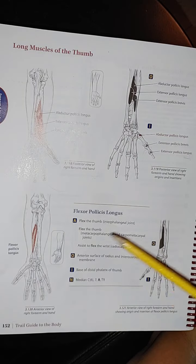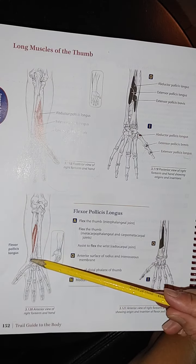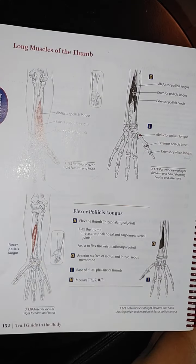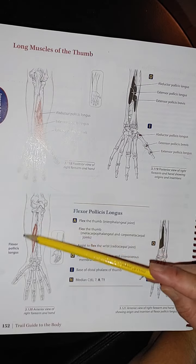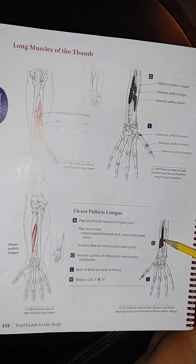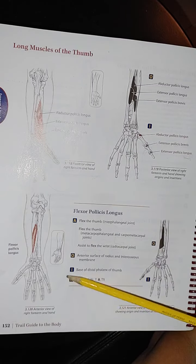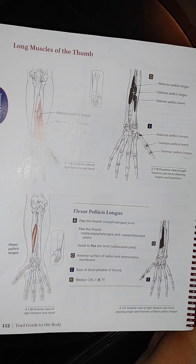It also assistively flexes the wrist at the radiocarpal joint. The origin is on the anterior surface of the radius and also the interosseous membrane. The insertion is the base of the distal phalanx of the thumb — again, because of the word 'longus,' it goes to the base. Nerve innervation is median nerve, C6, C7, C8, and T1.